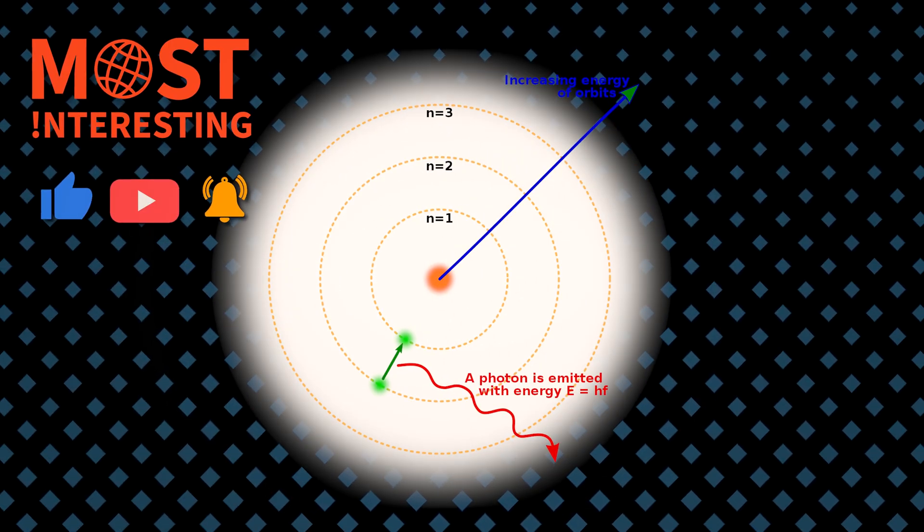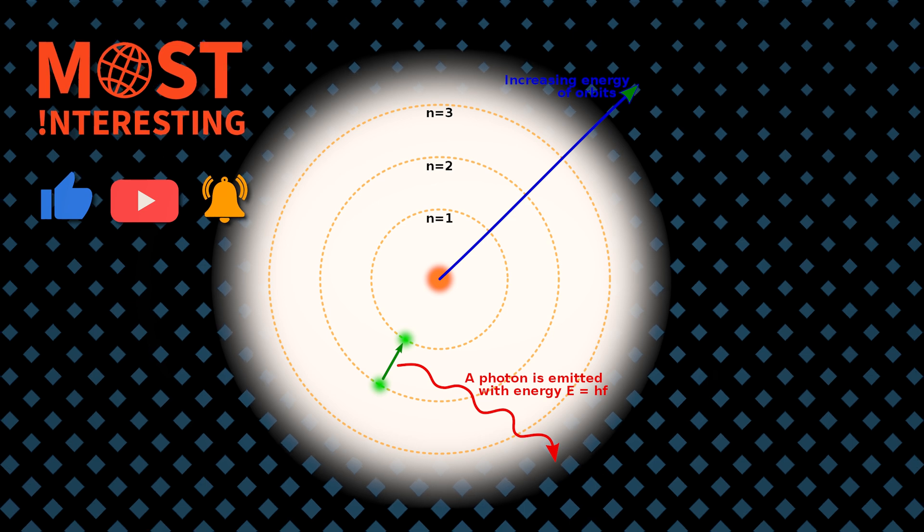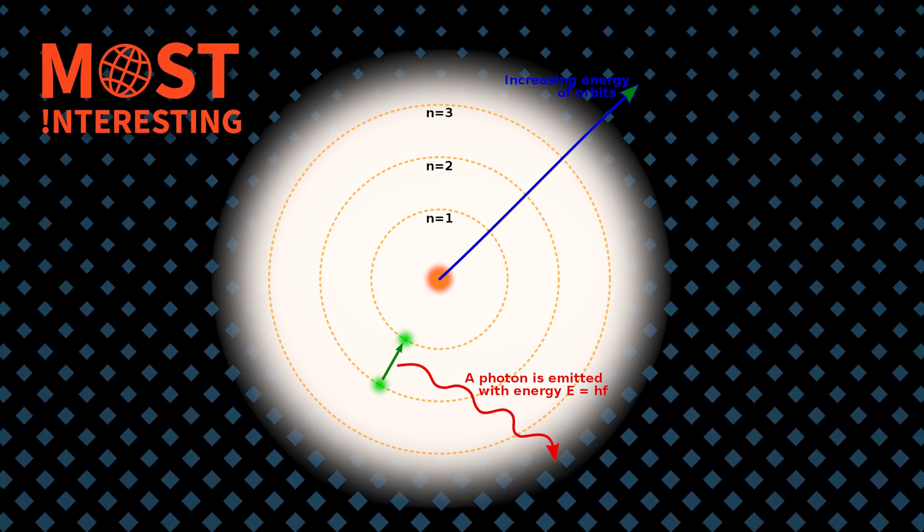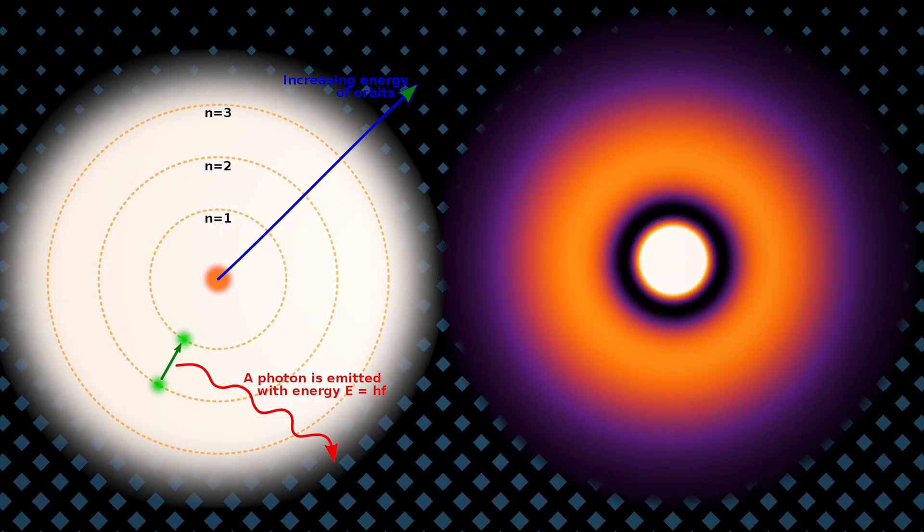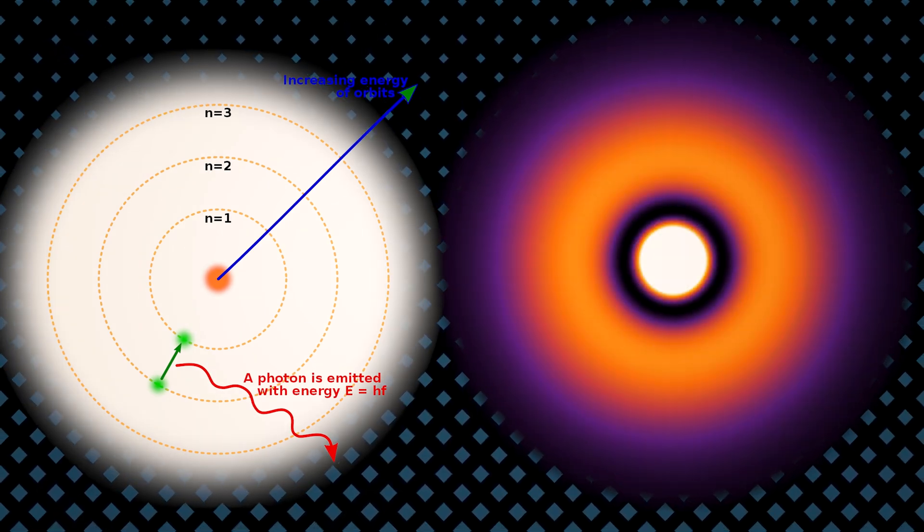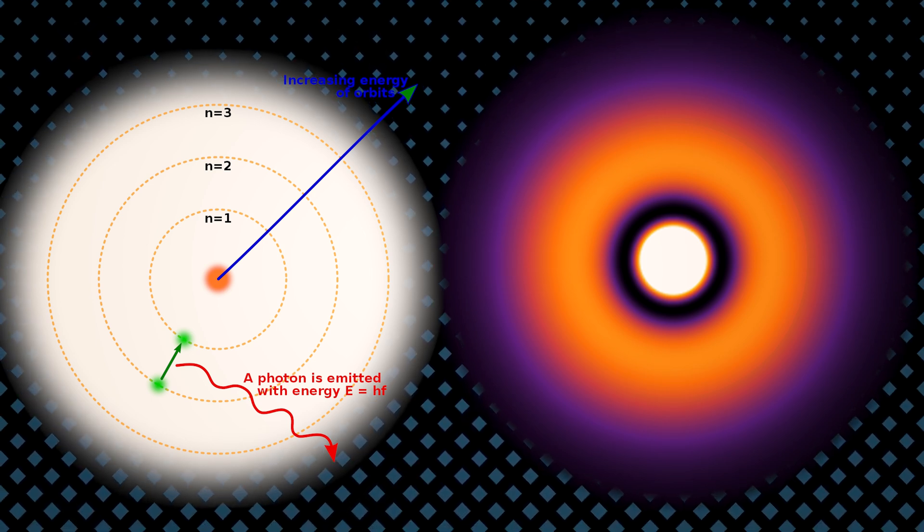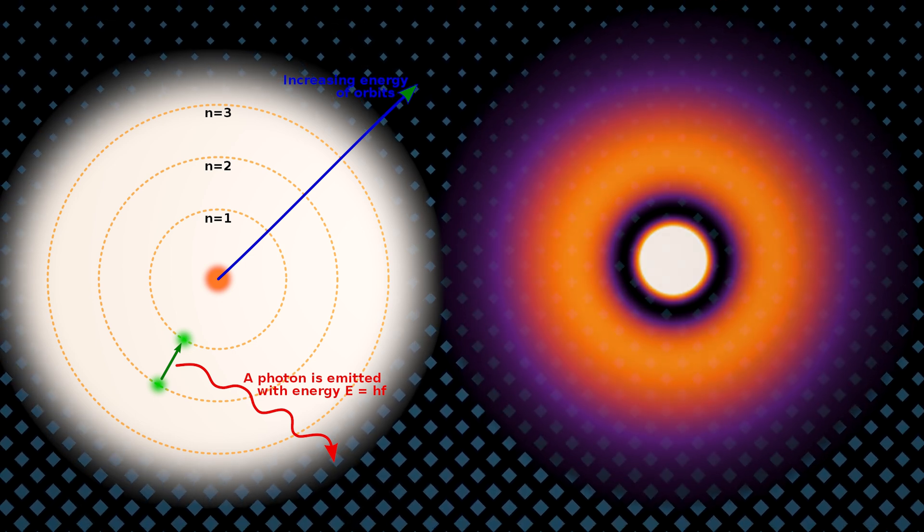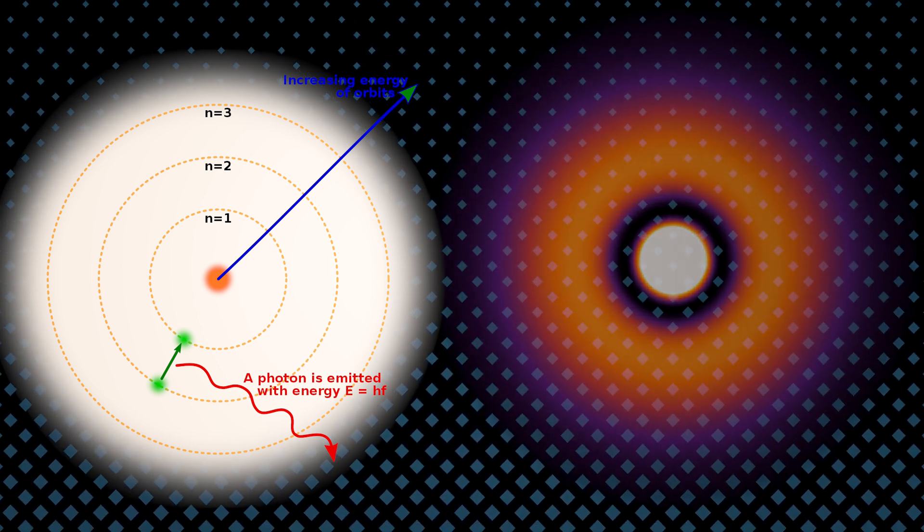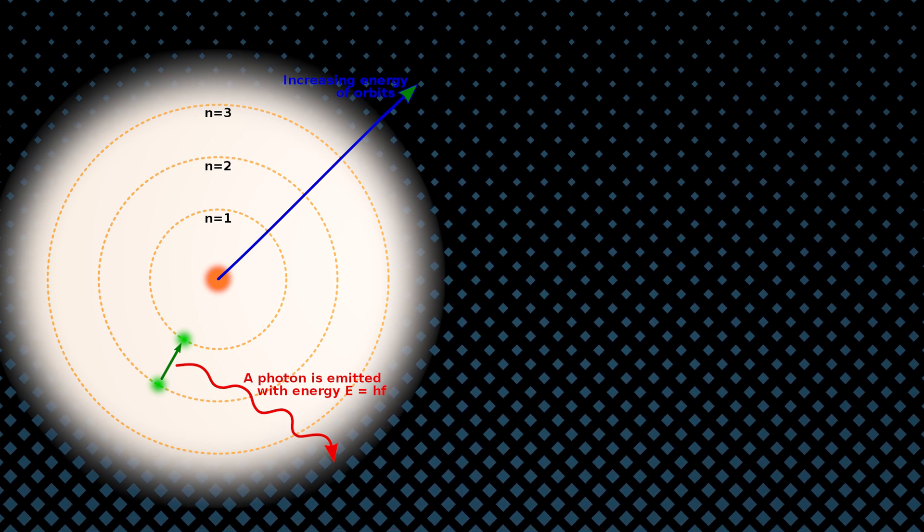The Bohr's planetary model played a pivotal role in explaining the stability of atoms and their emission or absorption of light. This model, though surpassed by the more sophisticated quantum mechanical atomic model, continues to offer valuable insights into the arrangement of electrons in an atom and their energy levels and serves as a valuable tool for simplifying complex atomic concepts even today.